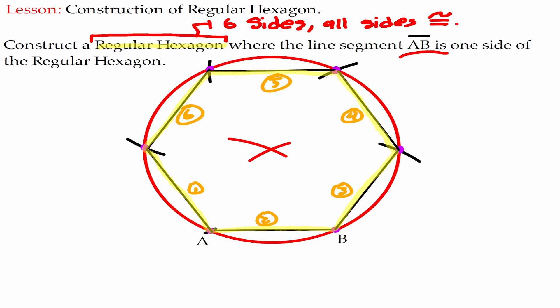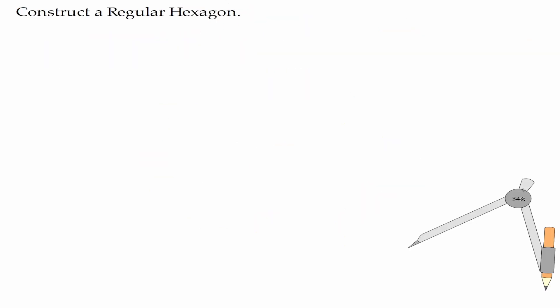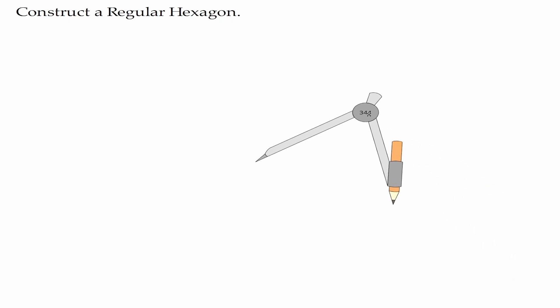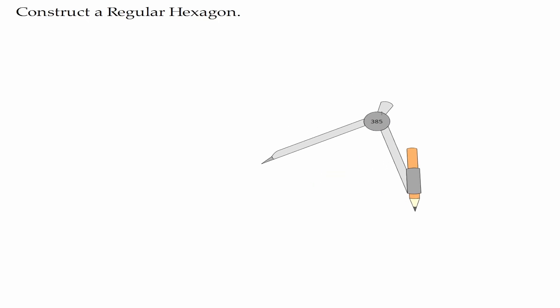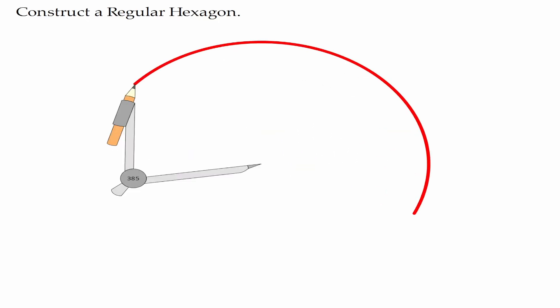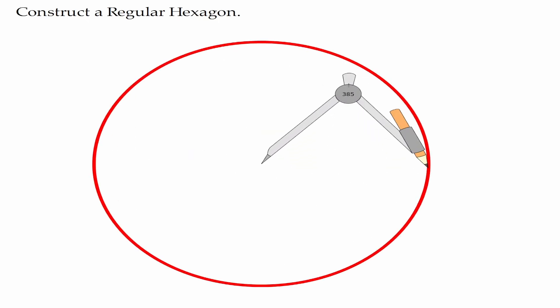Now let's take a look at one more example. What if we want to construct a regular hexagon and we're not given a side? The way that we're going to go about it is we're going to get our compass and create a circle — it doesn't matter what the radius is. Now let's make sense of the radius of the circle. The center of the circle is going to be about here, and using this radius we're going to perform the same process as we did before.